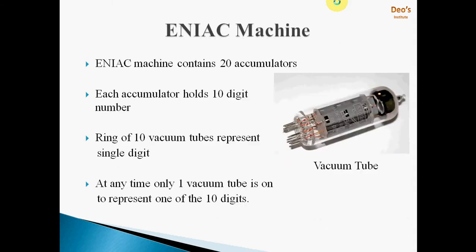The ENIAC machine had 20 accumulators where each accumulator could hold a 10-digit number. To represent 1 digit of a number, 10 vacuum tubes were required. A ring of 10 vacuum tubes is used to represent a single digit. At a time, only one vacuum tube is on to represent one of the 10 digits. So if you want to represent the number 5, only the 5th vacuum tube will be on and the rest will be off. This is how numbers are stored in an accumulator, and that's why the size of the ENIAC machine was very huge.